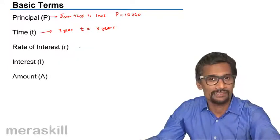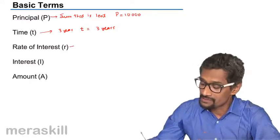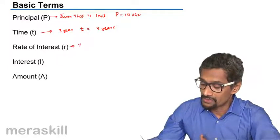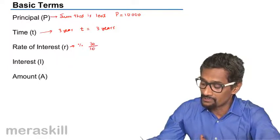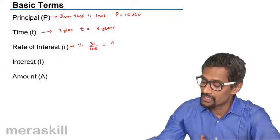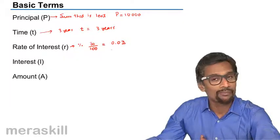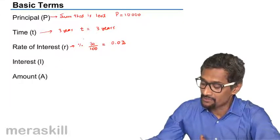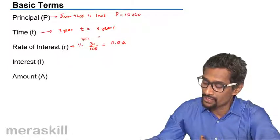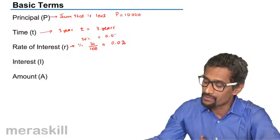Then you have the rate of interest. The rate of interest is how much percentage, which would be written as 30%, means 30 by 100, which can also be written as 0.03. So R can be written as 30% or you can even write it as 0.03.